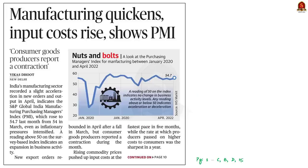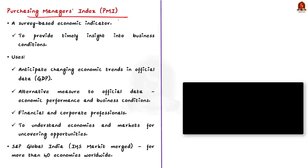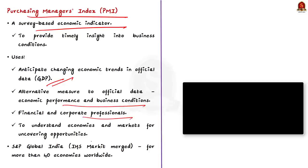This news article provides data about the Manufacturing Purchasing Managers Index, or PMI. The Purchasing Managers Index (PMI) is a survey-based economic indicator designed to provide timely insight into business conditions and the health of the global economy. PMI is widely used to anticipate changing economic trends in official data such as GDP, and as an alternative measure of economic performance. PMI data are used by financial and corporate professionals to better understand where economies and markets are headed and to uncover opportunities.